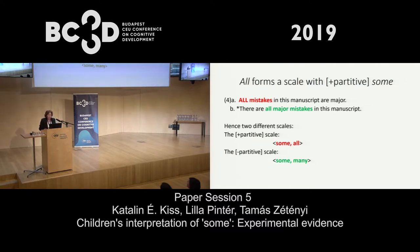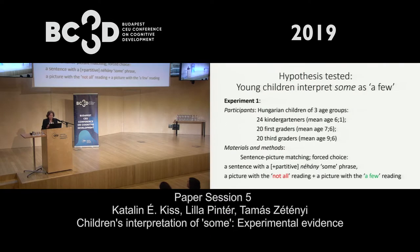So there are two scales involved. The typical test sentence — 'some horses jumped over the log' — is associated with the 'some/all' scale by adults, and with the 'some/many' scale by children. So again, our hypothesis was that children first acquire the 'a few' meaning of 'some.'